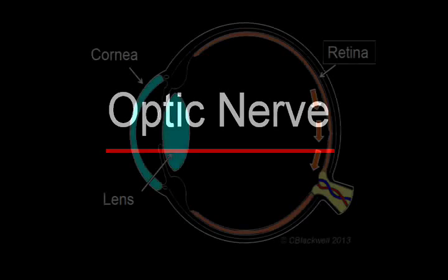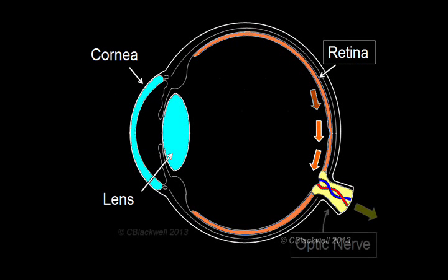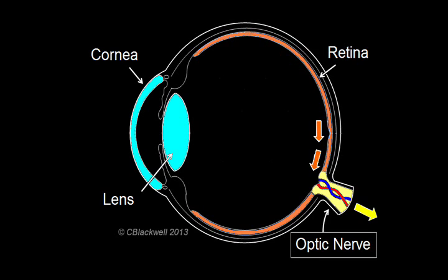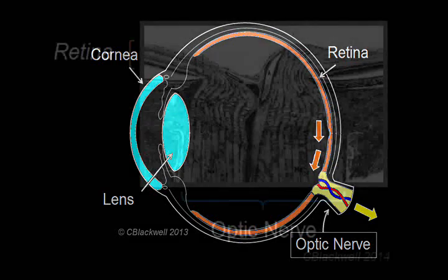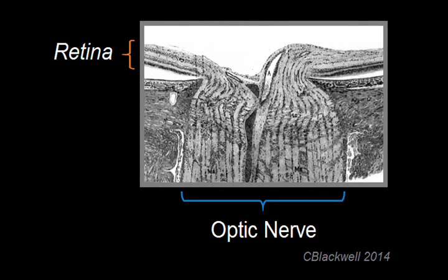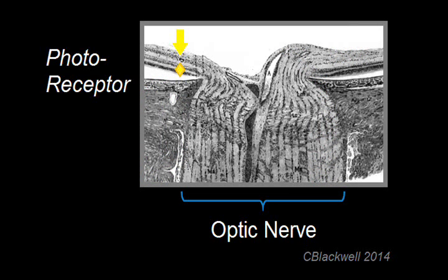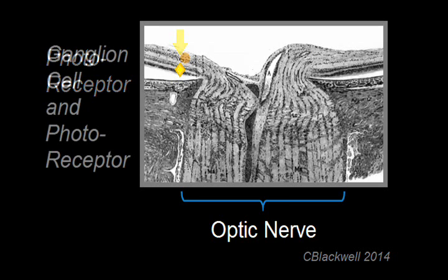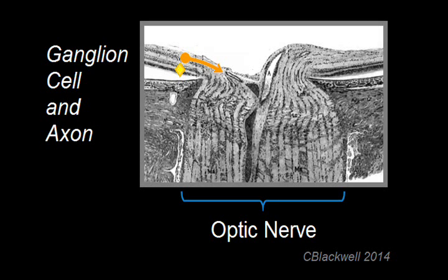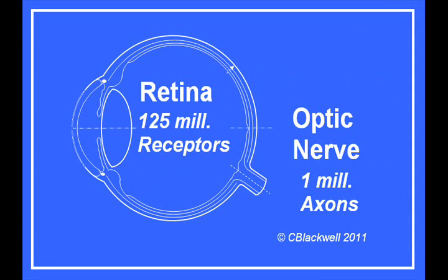Last, we come to the optic nerve, the telephone cable that connects the eyeball to the brain — more specifically, connects the retina to the brain. This shows the retina connection to the optic nerve. Briefly, when light hits a photoreceptor, that generates a nerve impulse which goes to a ganglion cell in the retina. From the ganglion cell, an axon extends along the retinal surface to the optic nerve and eventually to the brain. In round numbers, there are about 125 million rods and cones, but only about 1 million ganglion cells, and therefore 1 million nerve fibers contained in the optic nerve.